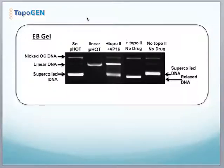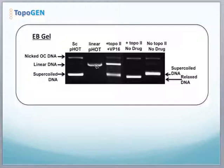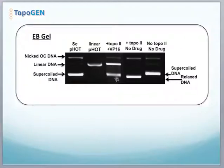An ethidium bromide gel shows a different picture. The supercoiled DNA and open circular DNA migrate as shown in the first lane. Linear plasmid is shown as your marker cut with a restriction enzyme. With no topo and no drug, here is your supercoiled DNA. Immediately next to a reaction with topo II, you can see the resolution between species is very poor. Relaxed DNA actually moves faster in this gel system than supercoiled DNA. When you add topo II plus VP16, you generate linear DNA along with some relaxed DNA in the reaction.